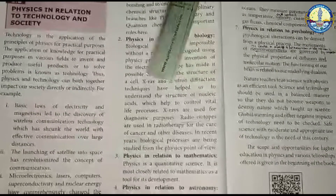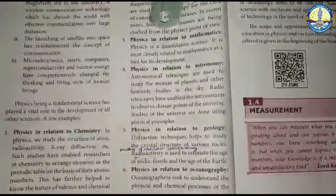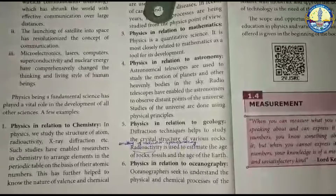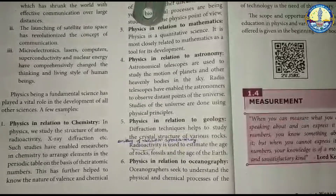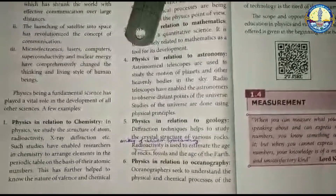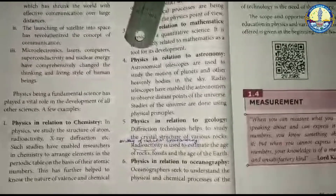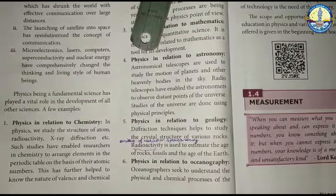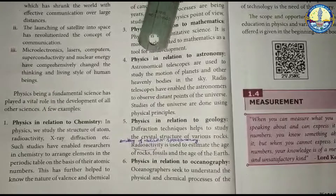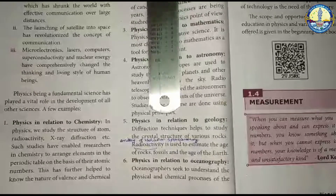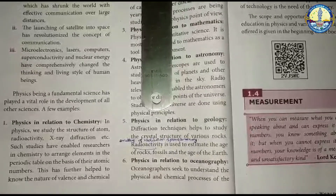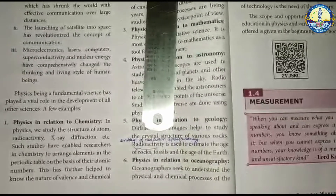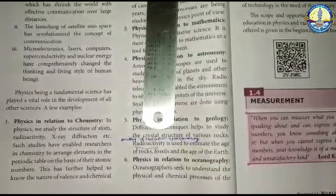Physics in relation to astronomy: astronomy is closely related to physics. The motion of planets and heavenly bodies in the sky can be understood through physics. Radio telescopes help astronomers measure distances in the universe. The physical principles of physics form the basis of understanding the universe.